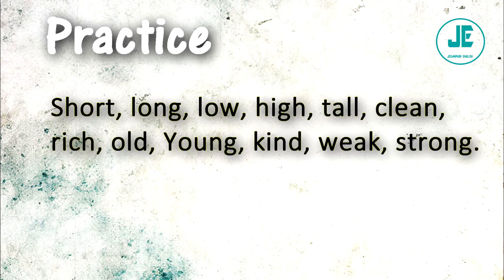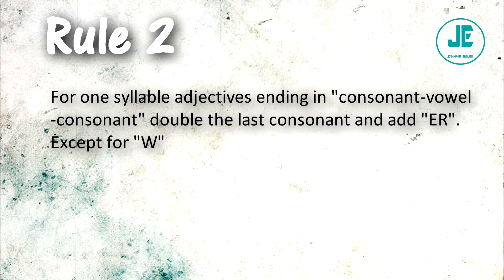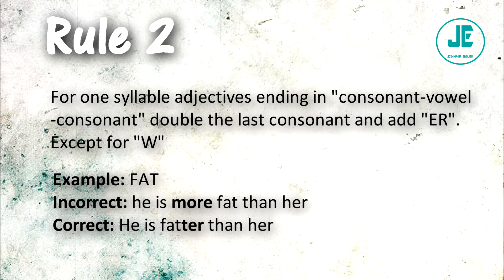Rule number two: for one-syllable adjectives ending in consonant-vowel-consonant, double the last consonant and add '-er,' except for 'w.' For example, 'fat' — the first letter is a consonant, the second is a vowel, and the third is a consonant. So you double the last consonant, the T. Incorrect: 'He is more fat than her.' Correct: 'He is fatter than her' — double the T, then add '-er.'